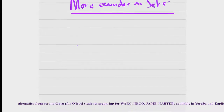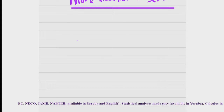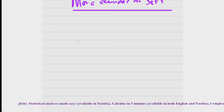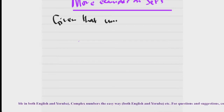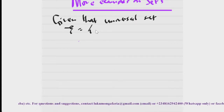The first example is a 'why' question. Given that the universal set — don't forget, we can write the universal set as U — contains the following elements.